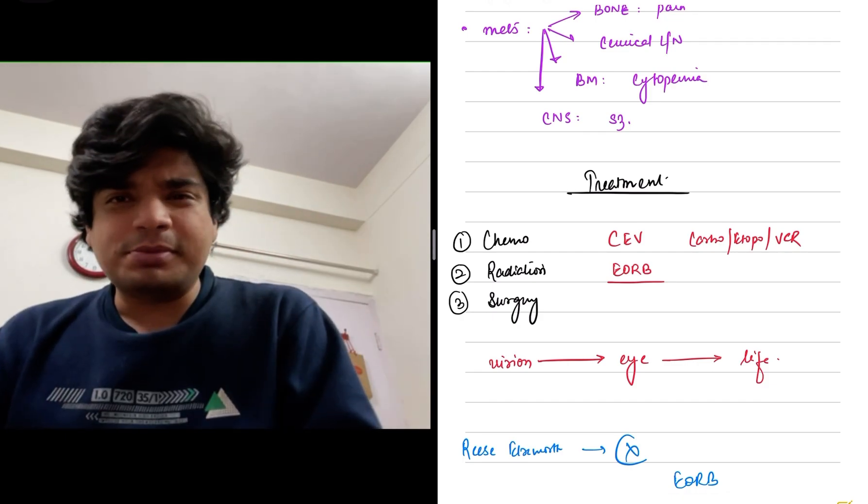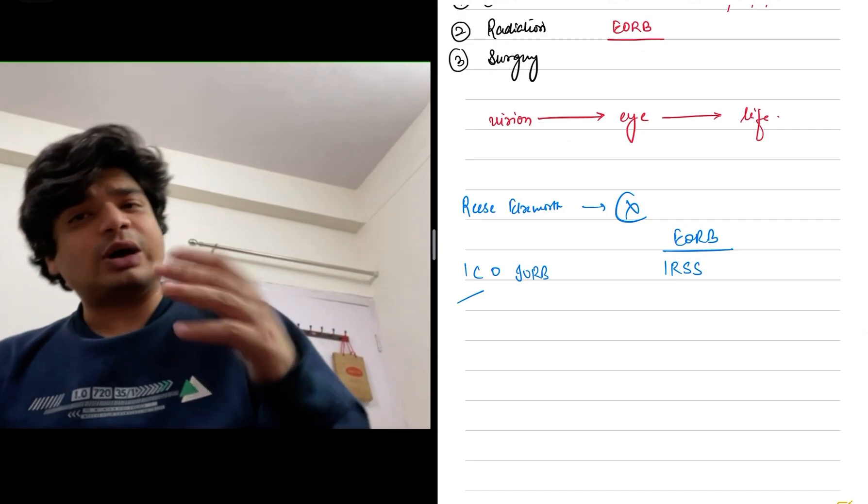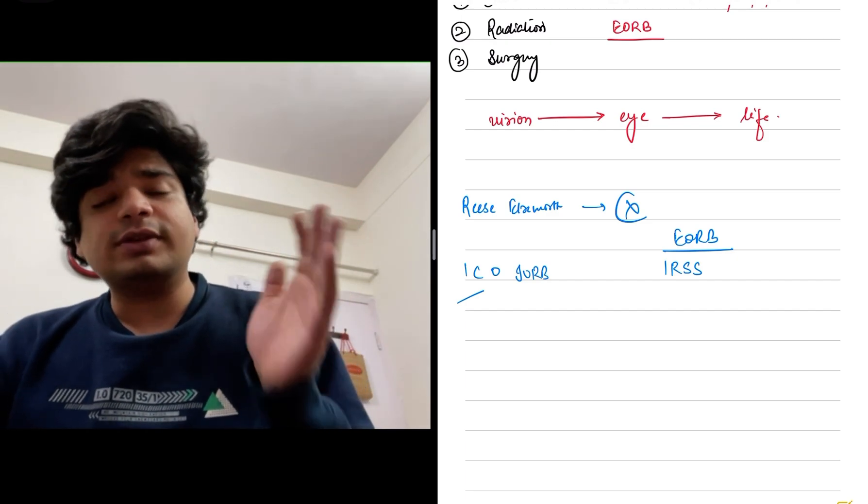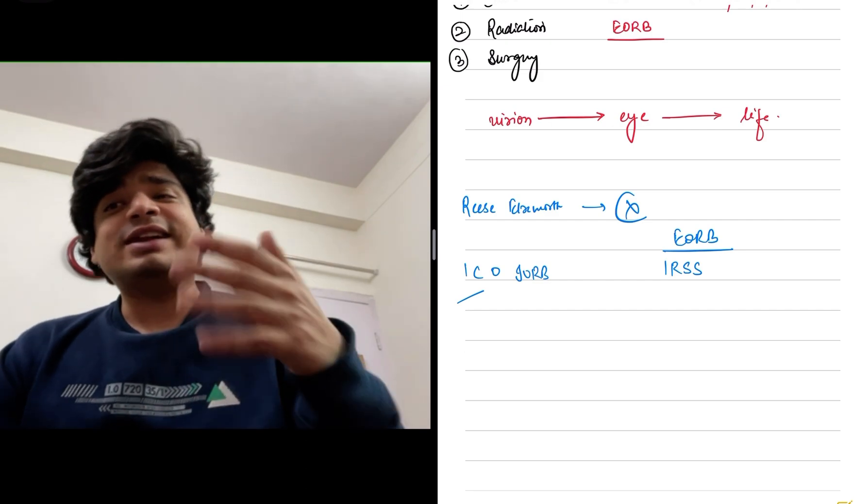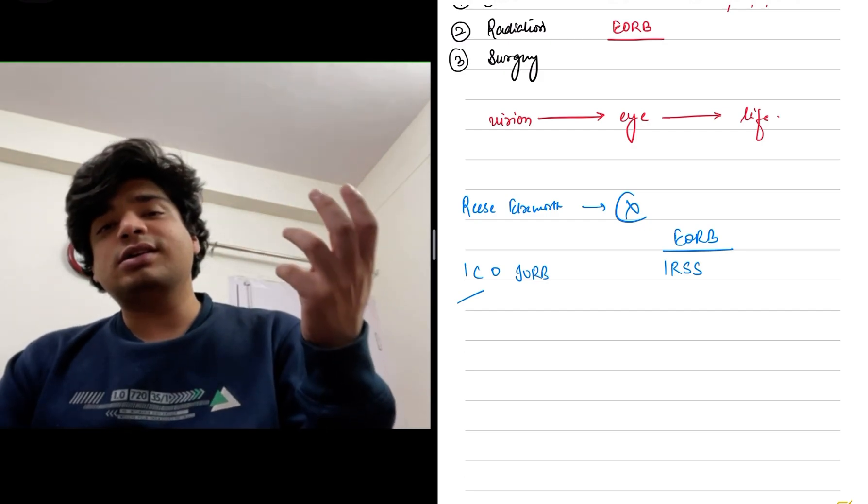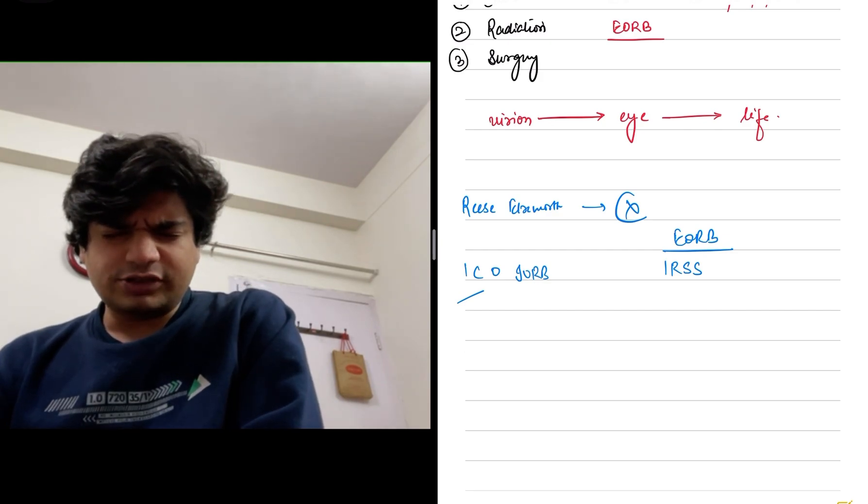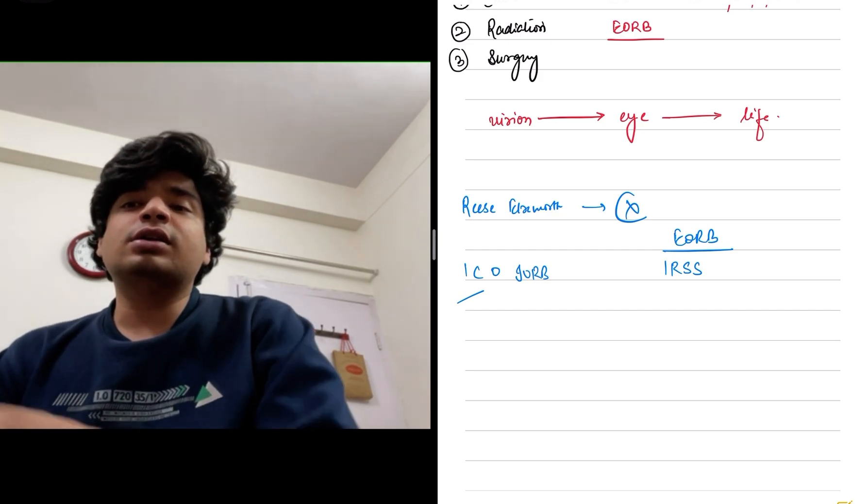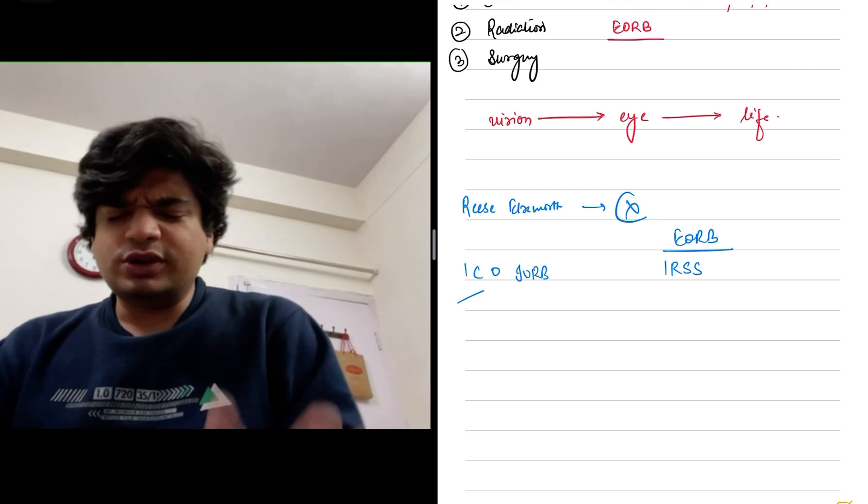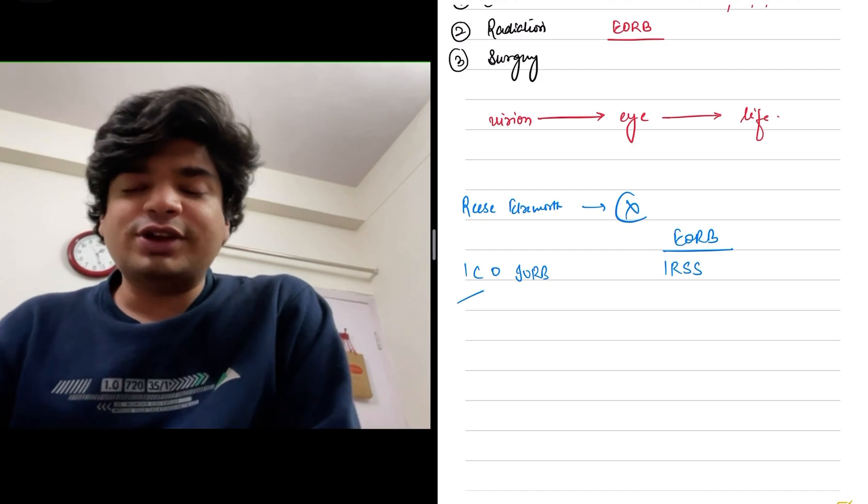You don't need to remember the exact details. Reese-Ellsworth classification was initially used but nowadays it's redundant. I don't think it will be asked because it's now redundant. Instead, now we have for extraocular RB the International Risk Stratification and IRSS staging system. For intraocular retinoblastoma, we have International Classification of Intraocular Retinoblastoma. I won't go into the details because I think they are way too detailed and would not be asked in this examination. So thank you and have a nice day.